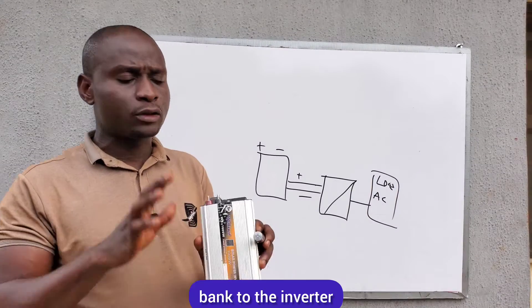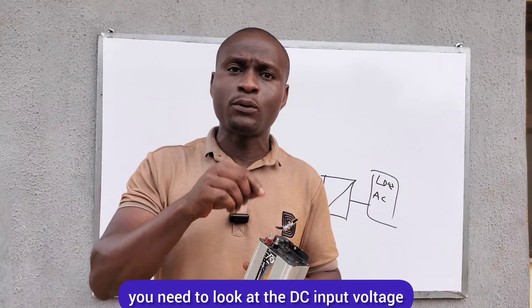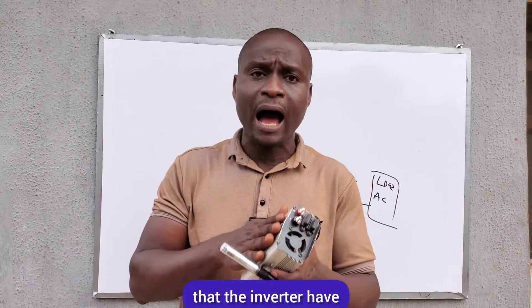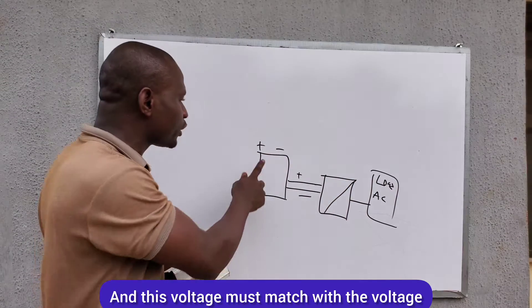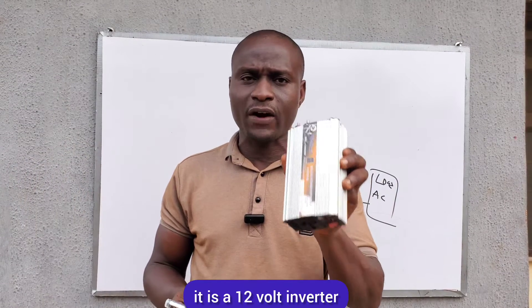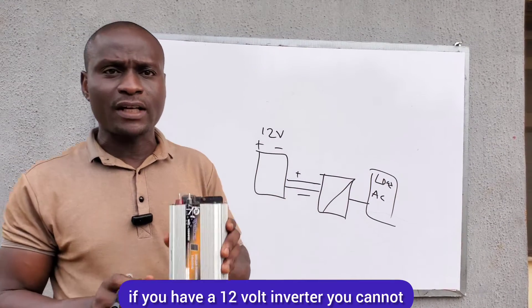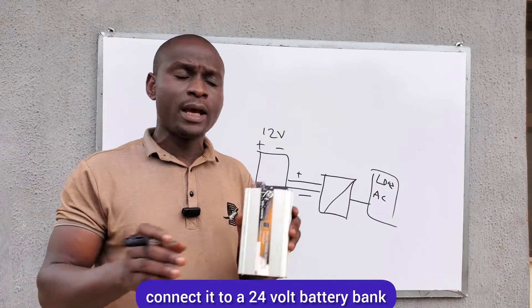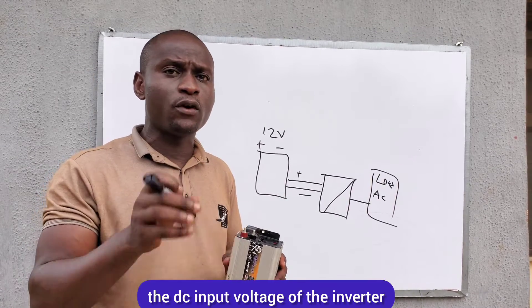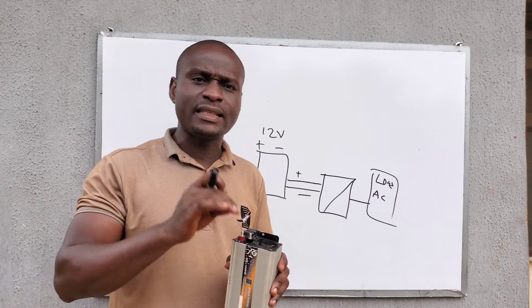When connecting your battery bank to the inverter — whether pure sine wave or modified sine wave — you need to look at the DC input voltage, which is the nominal system voltage of that inverter. This voltage must match the voltage of your battery bank. If the battery bank is 12 volts, you can only connect it to a 12-volt inverter. You cannot connect a 12-volt inverter to a 24-volt battery bank, as they are not compatible, and the higher voltage can destroy the internal circuits of the inverter.